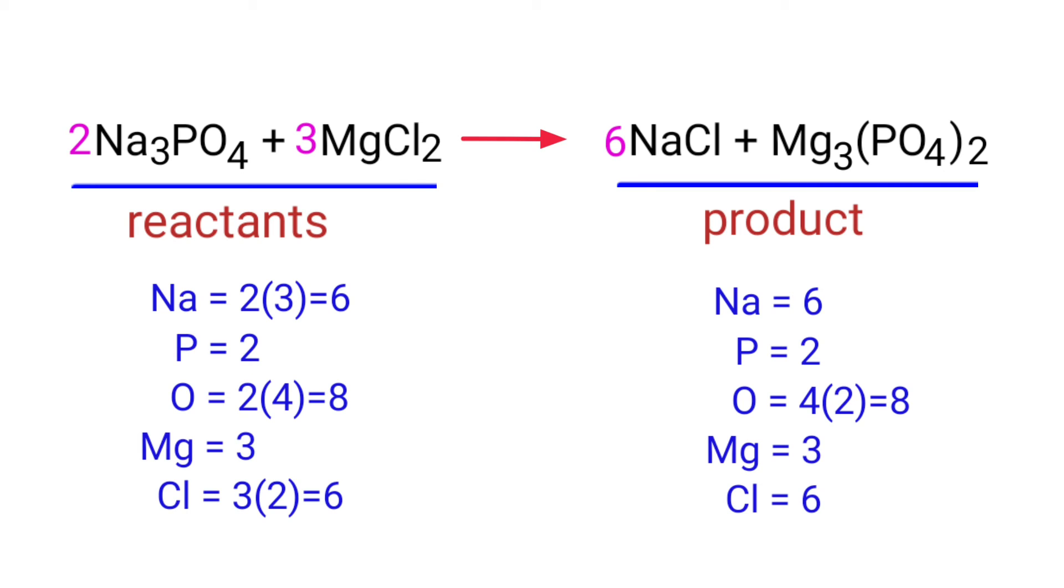The equation is now balanced. There are 6 sodium atoms, 2 phosphorus atoms, 8 oxygen atoms, 3 magnesium atoms, and 6 chlorine atoms on both sides.